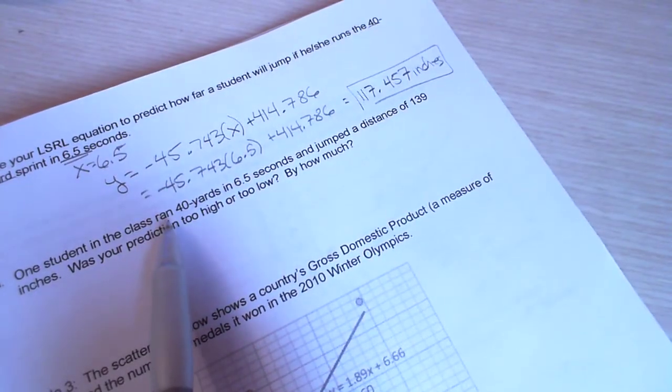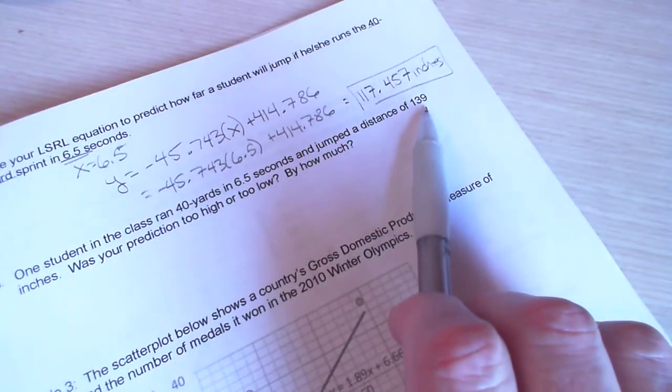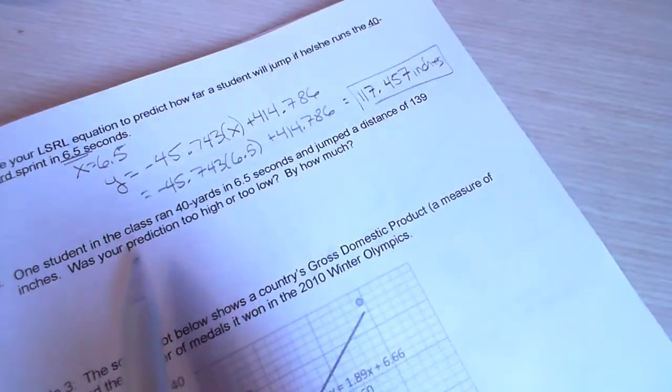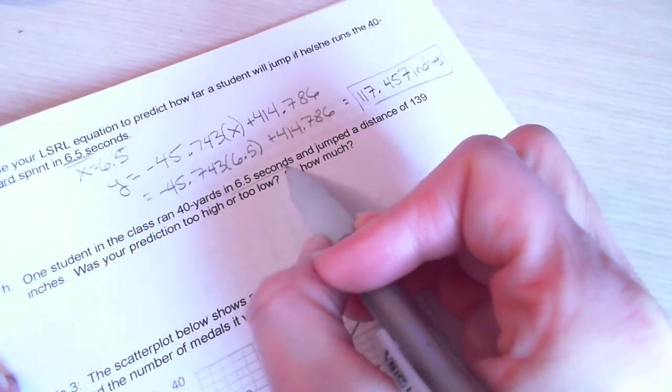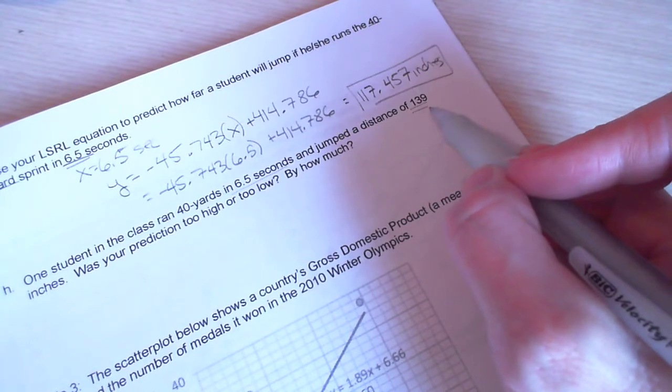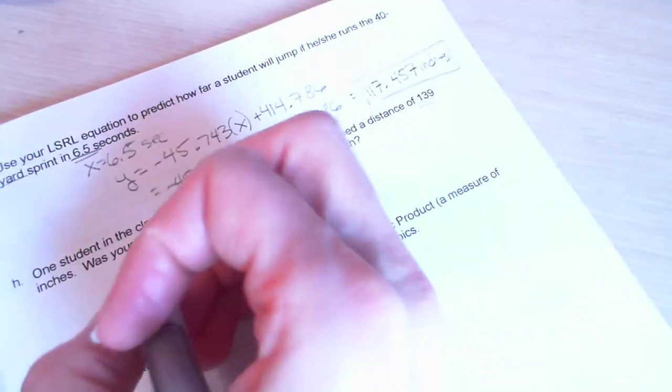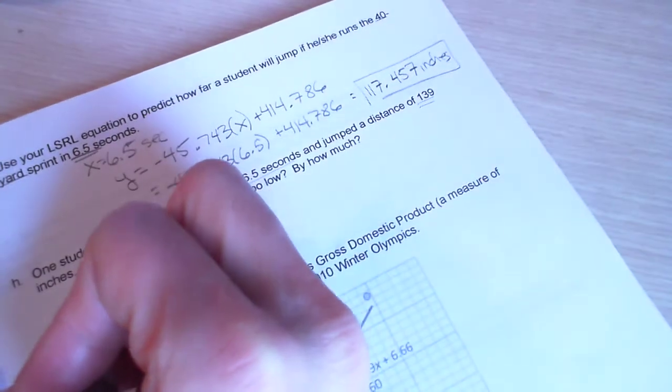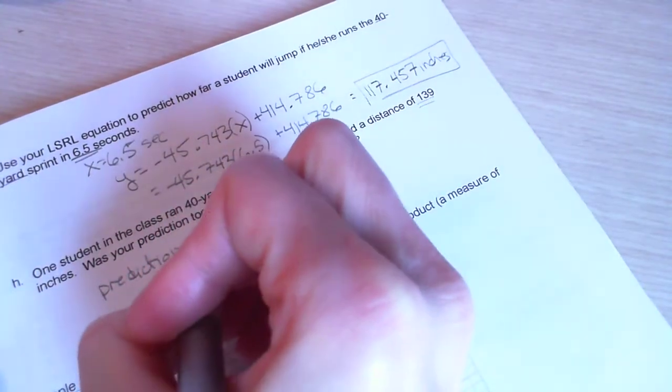One student in the class can run 40 yards in 6.5 seconds and jumped a distance of 139 inches. Was your prediction too high or too low? So, they ran 6.5 seconds, which is the same time we had up here. But, they actually jumped 139 inches. And we predicted they would only jump 117 inches.